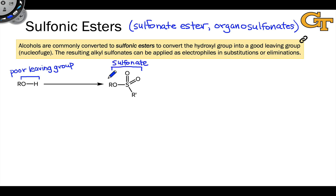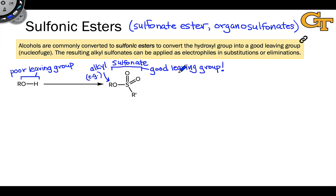So if R is an alkyl group, for example, we could refer to this as an alkylsulfonate. The sulfonate group, unlike hydroxide, is a good leaving group. This means that we can apply organosulfonates in nucleophilic substitution reactions, with the sulfonate acting as the leaving group and the R group acting as the electrophile. We'll explain why that is on the next slide.